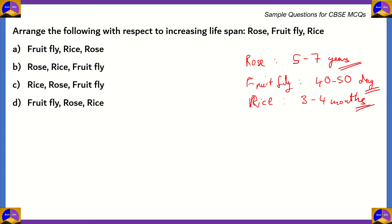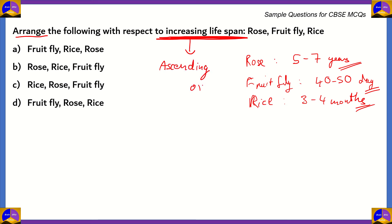Now that we know the lifespan of each — rose, fruit fly, and rice — we can see that rose has the highest lifespan while fruit fly has the least. The question asks us to arrange them with respect to increasing lifespan, which means ascending order. That means we should write the organism with the least lifespan first: fruit fly first, then rice, and after that rose.